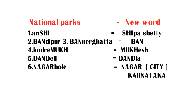Coming to the second one, Bandipur — the first three letters are B-A-N, pronounced 'BAN.' Similarly, the third one, Bannergatta — the first three letters are also B-A-N, pronounced 'BAN.' So try to remember Bandipur and Bannergatta National Parks as BAN, since both national parks contain the word BAN.